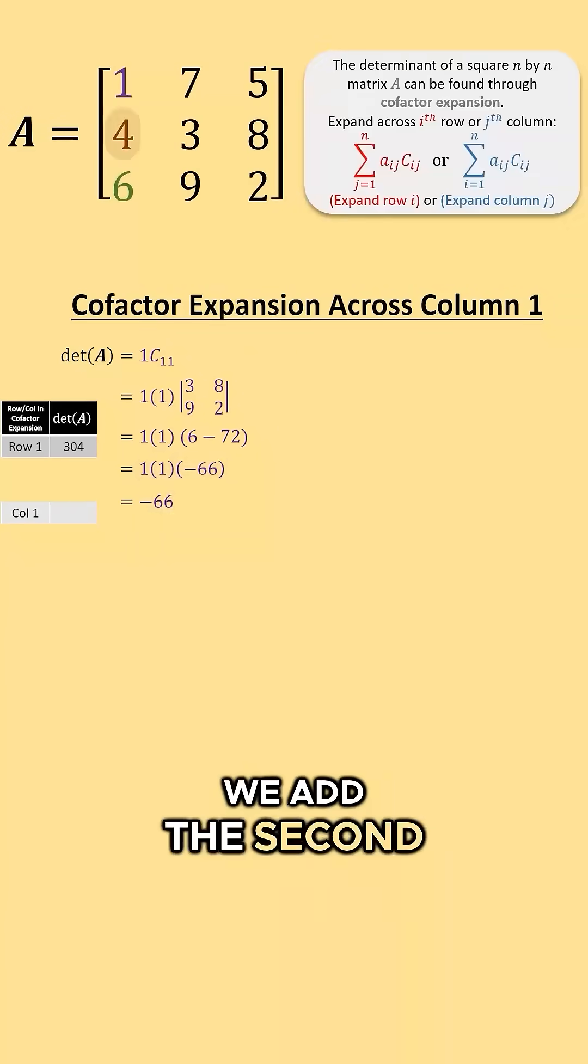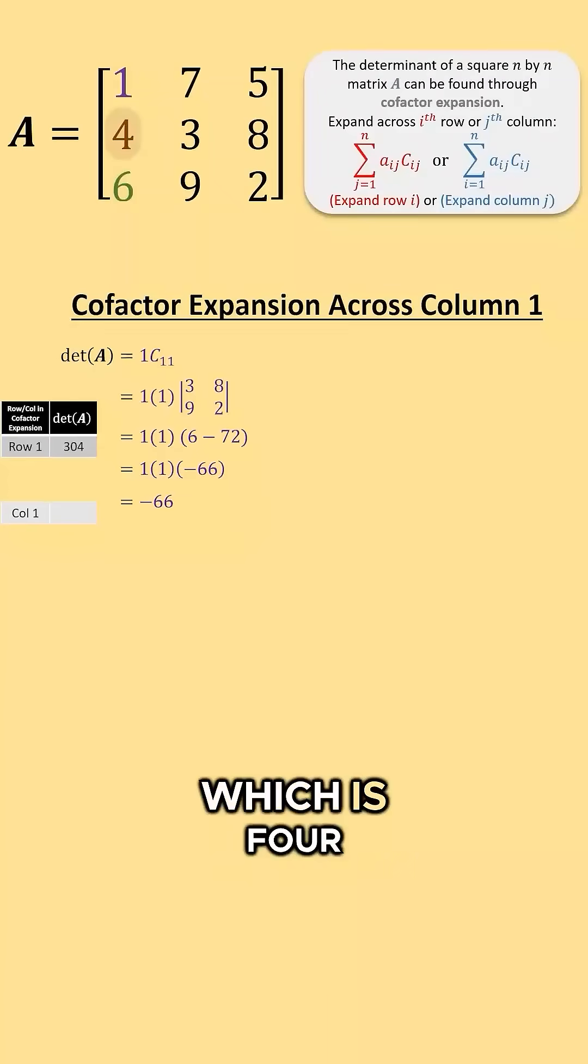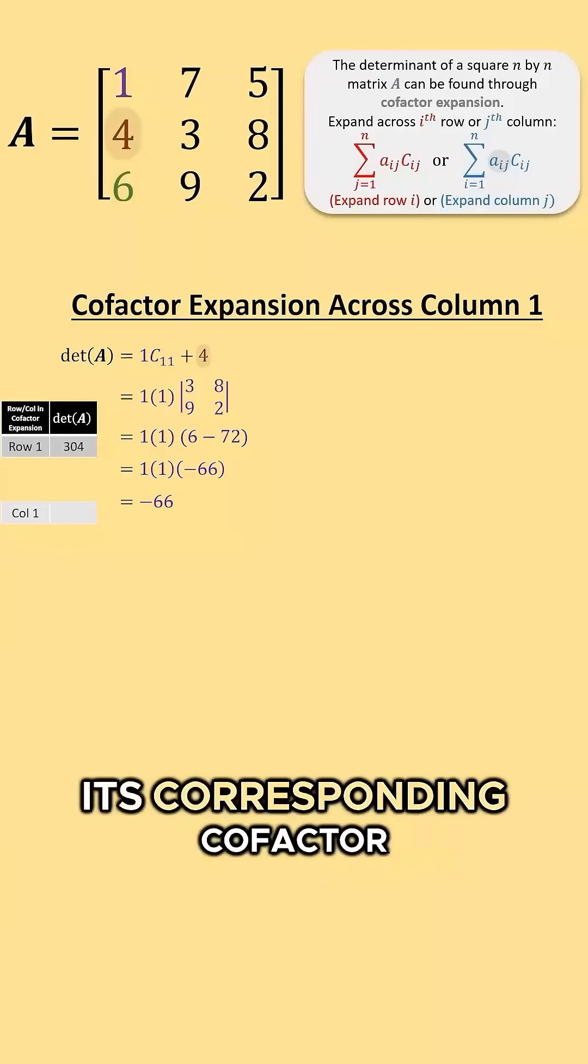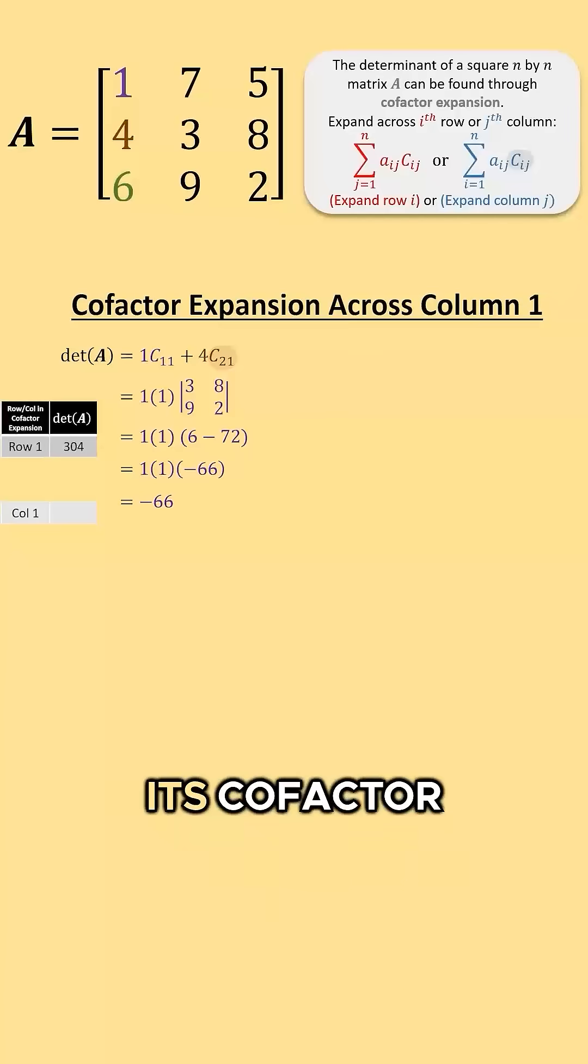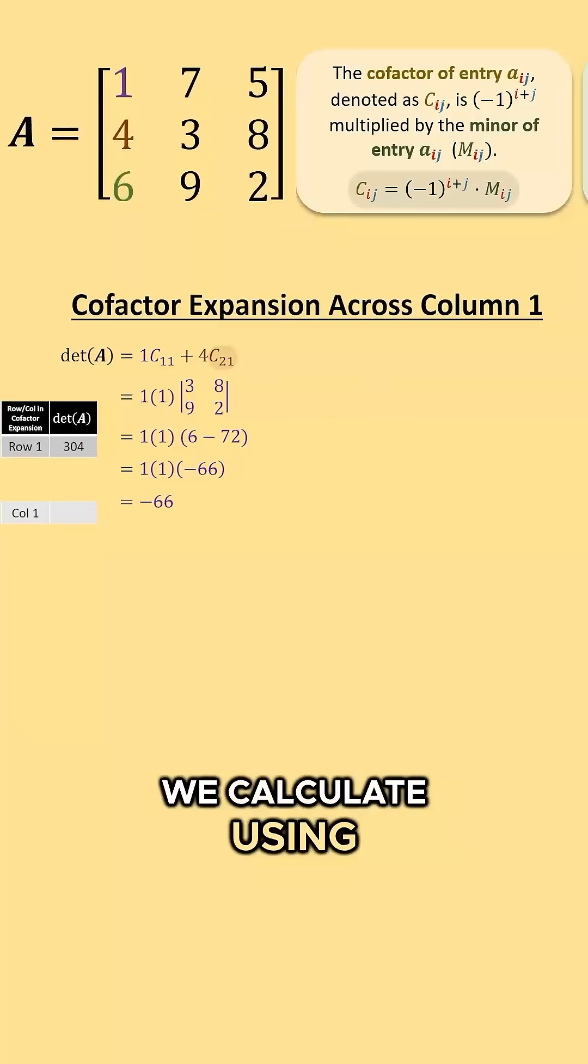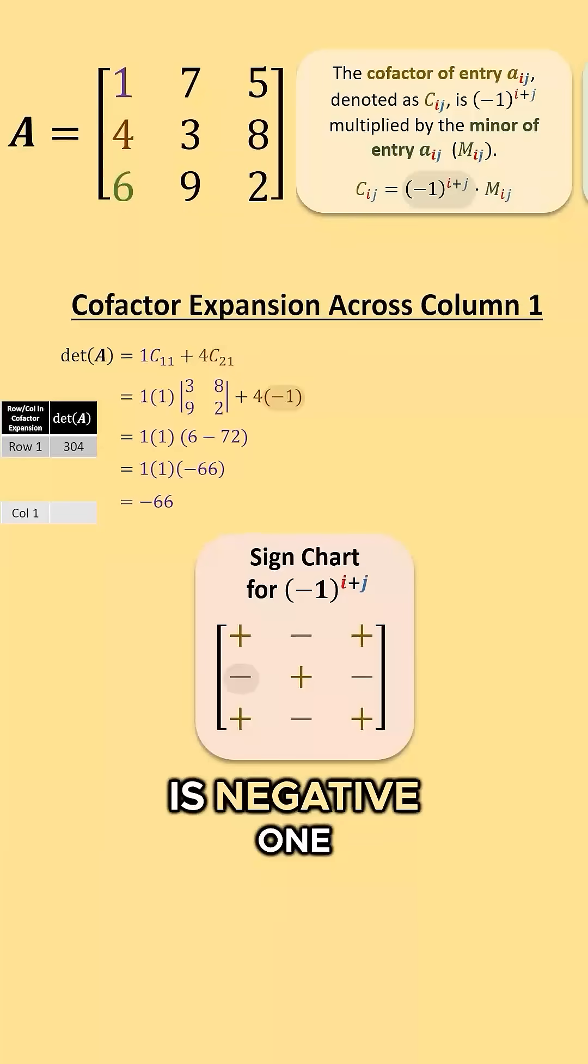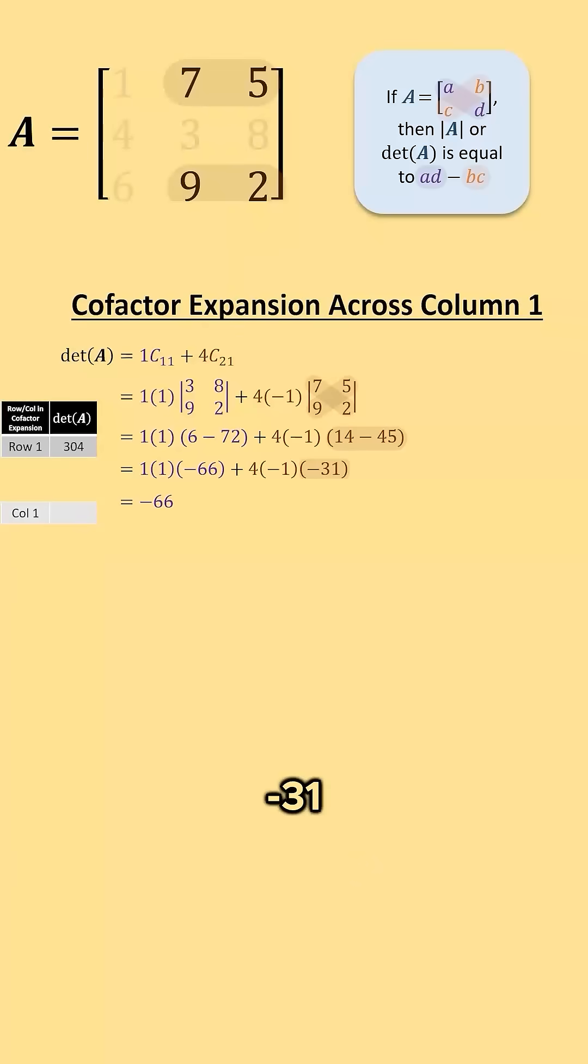We add the second entry of column 1 which is 4 and multiply by its corresponding cofactor. Its cofactor we calculate using the sign from the sign chart is negative 1 and its minor is equal to negative 31.